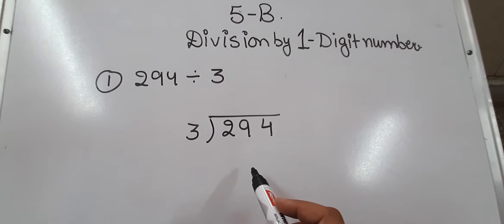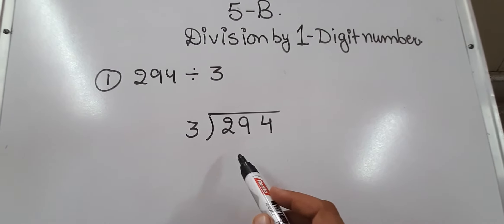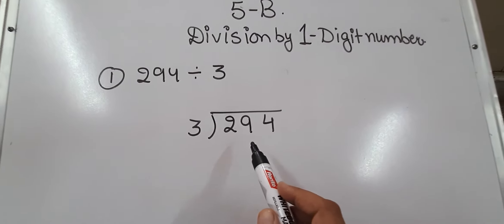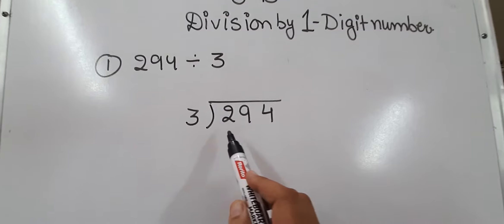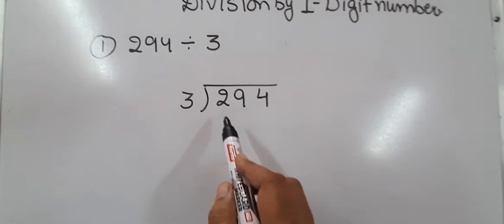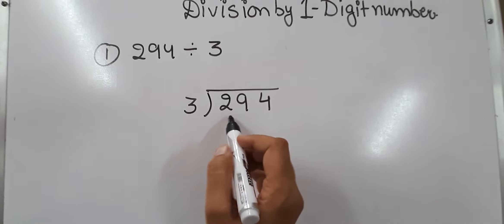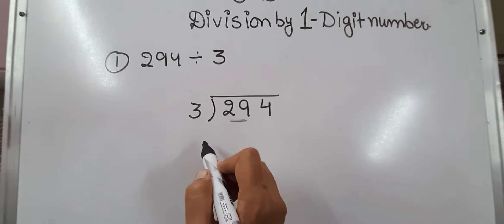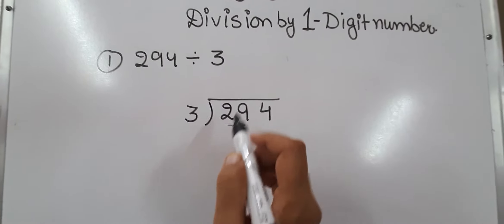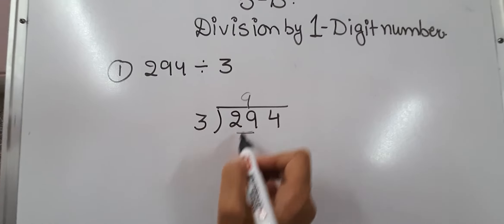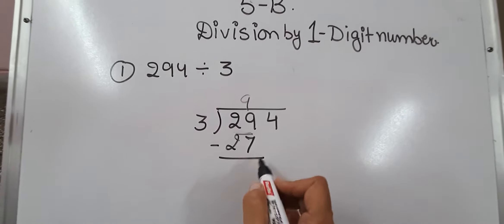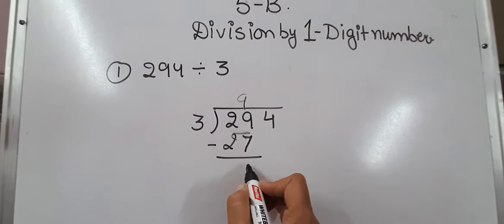Continuing with the last video, let us see another example: 294 divided by 3. We will again see the place value. Here 2 is smaller than 3, so we are going to take these two digits together. In the table of 3, 3 nines are 27. We will subtract this — 7, 8, 9.